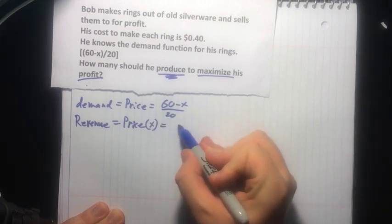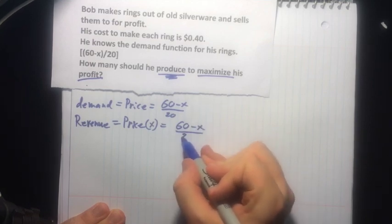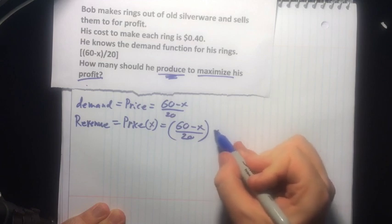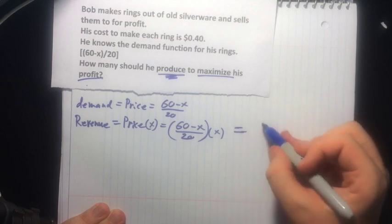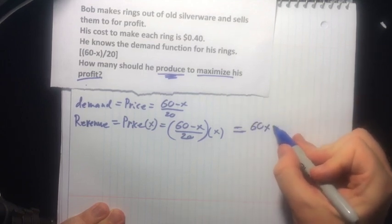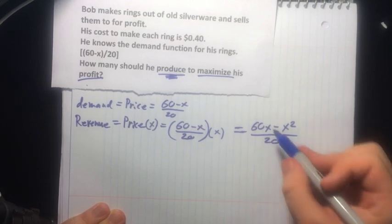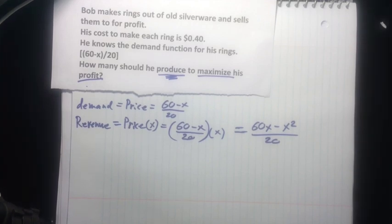And for this particular situation, we've got (60 - x)/20, that's our price, times x. And here we're talking about 60x minus x squared, still over 20. So that's great. And it's still a function of x. That'll keep coming up.